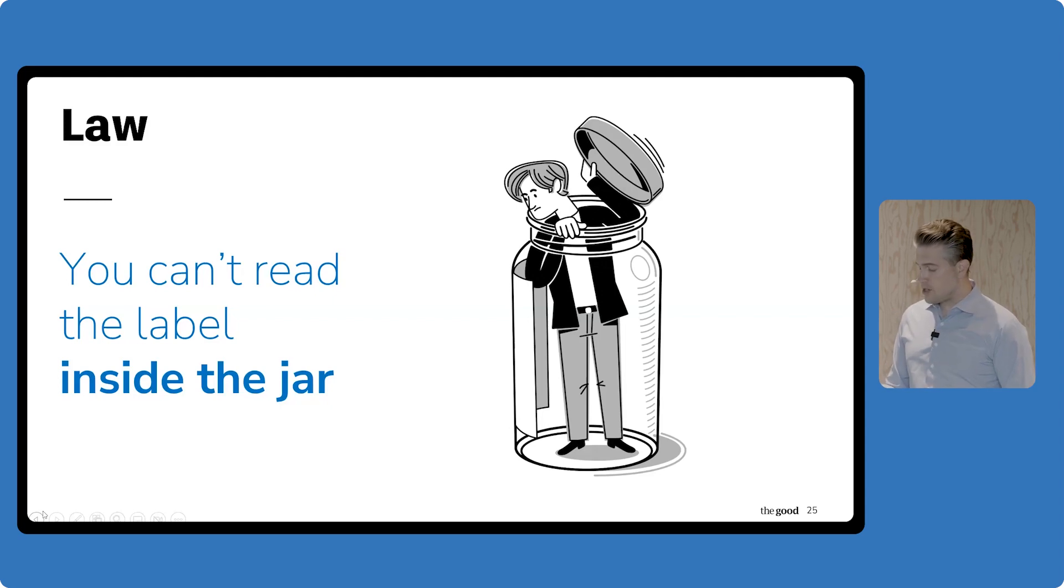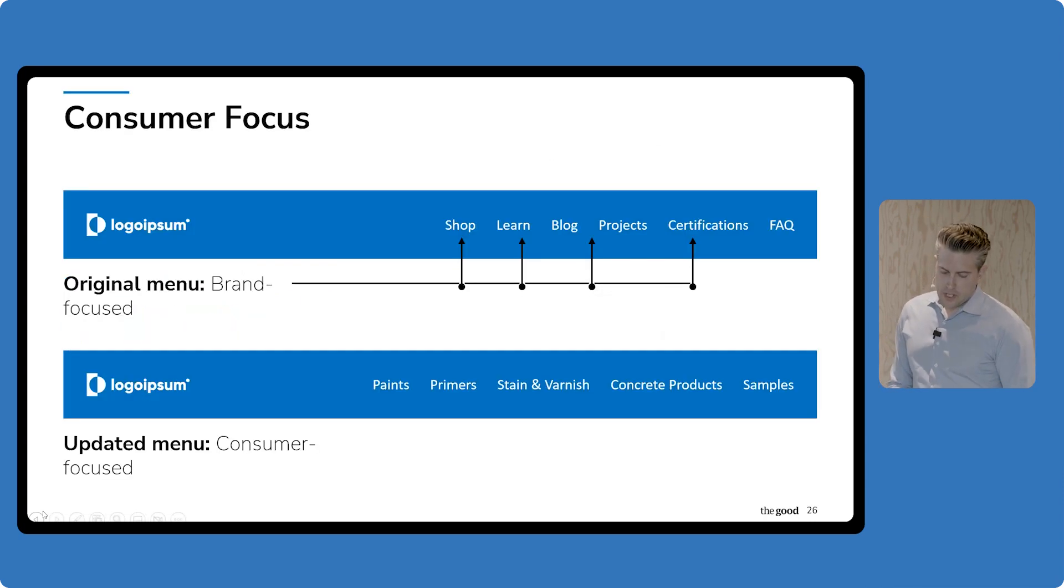So once we had gathered that out-of-the-jar perspective for them, we had our diagnosis and we knew what to prescribe. Our team's highest priority became testing the menu and creating a shoppable-focused version. This is the navigation originally at the top, which was super brand-focused. They had shop, yes, but everything else was more about the brand - their projects, the certifications, FAQs. Along with removing the logos, we also ended up redesigning this navigation to be much more focused on products than the brand - paints, primers, stain and varnish, concrete products, and samples. All about what they offer and how they help you solve your pain or need. I encourage you all to shift the focus away from your brand and be thinking about the visitor. What are their needs? And the best way to do that is to talk to them.